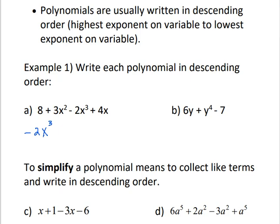Then the next biggest exponent is 2, so that goes next: plus 3x squared. Looking at what's left, the term with a variable — where the exponent is understood to be 1 — would be the next biggest, and the constant always goes last. So that would be the standard form of a polynomial.